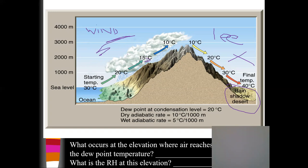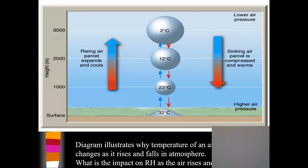There's a mountain in Hawaii on the island of Kauai where they get about 400 inches of rainfall on the windward side of the mountain, compared to about 10 inches of rainfall on the leeward side — all because of adiabatic heating and cooling. It's crazy.